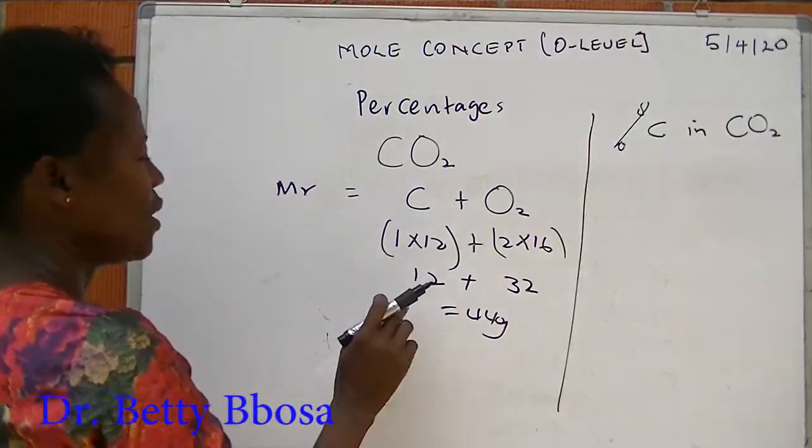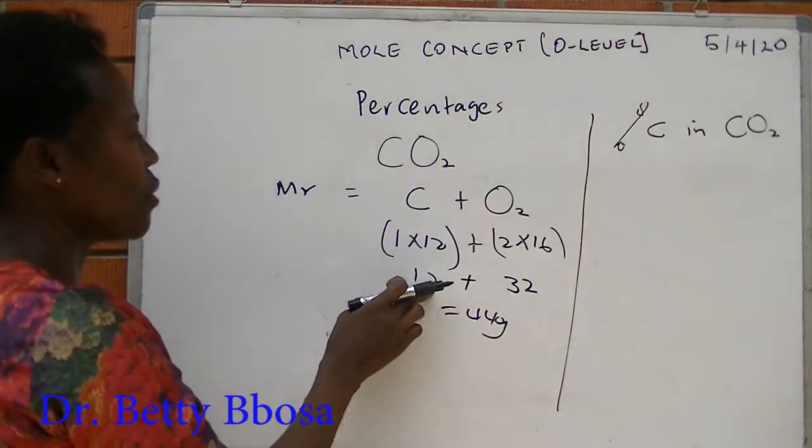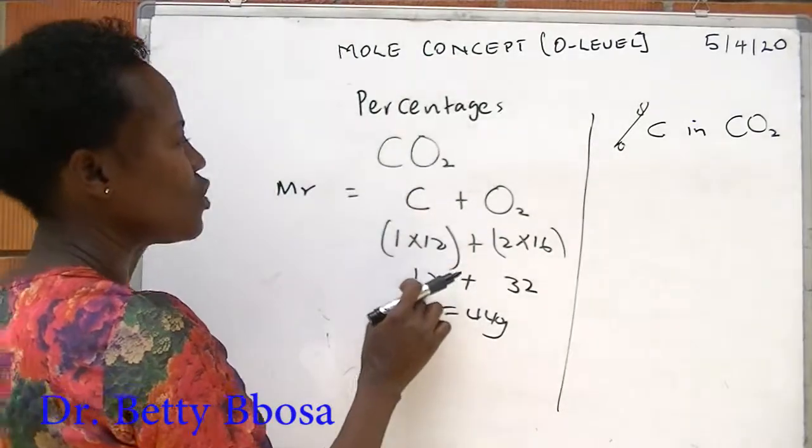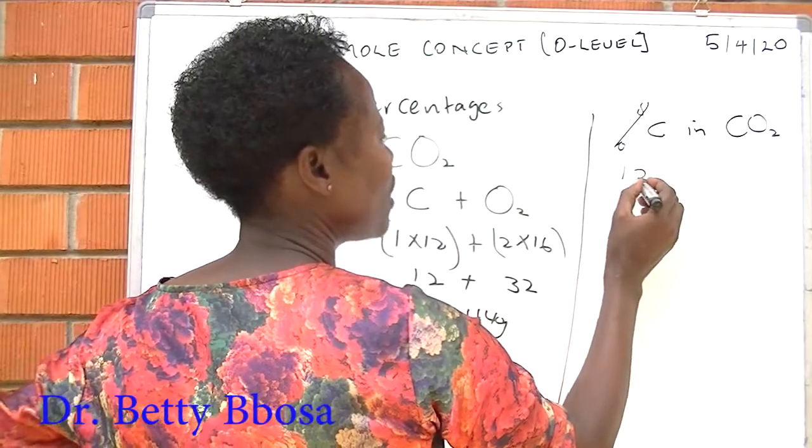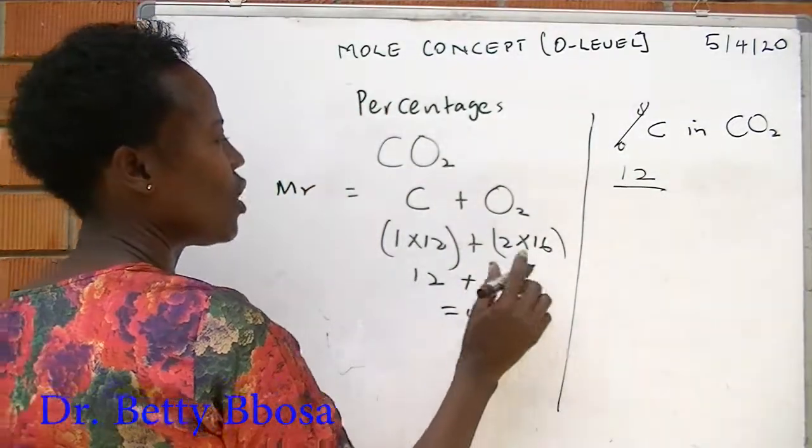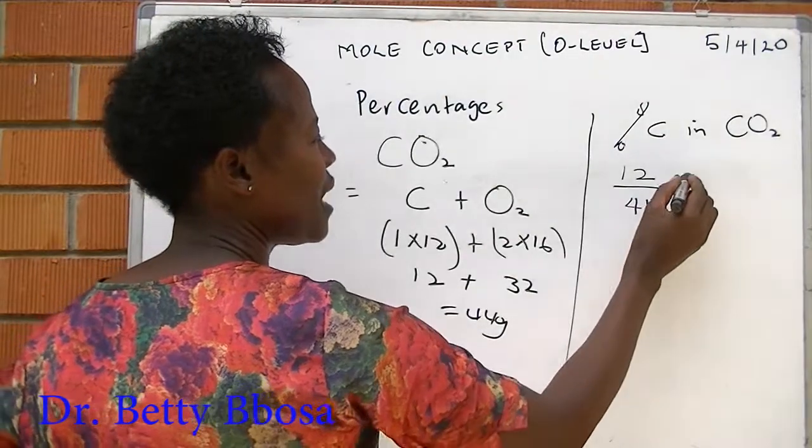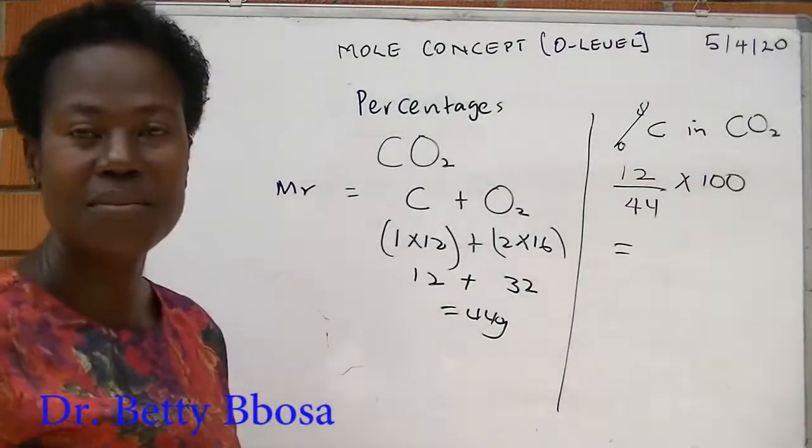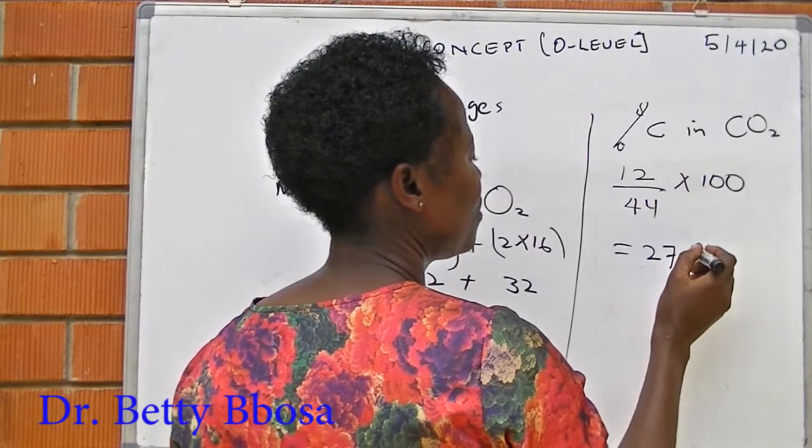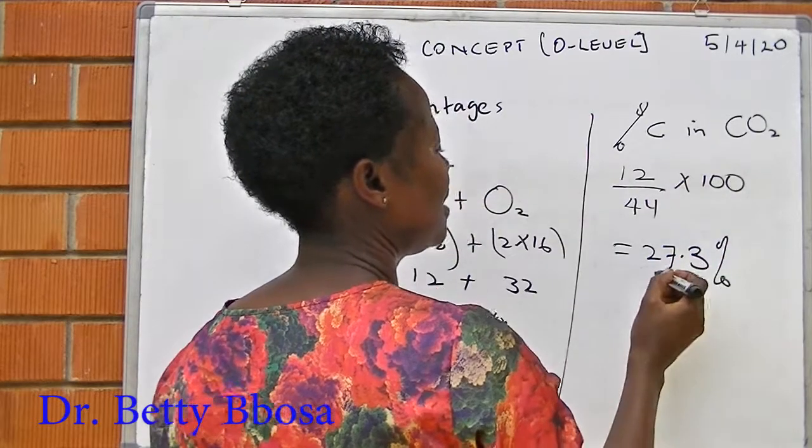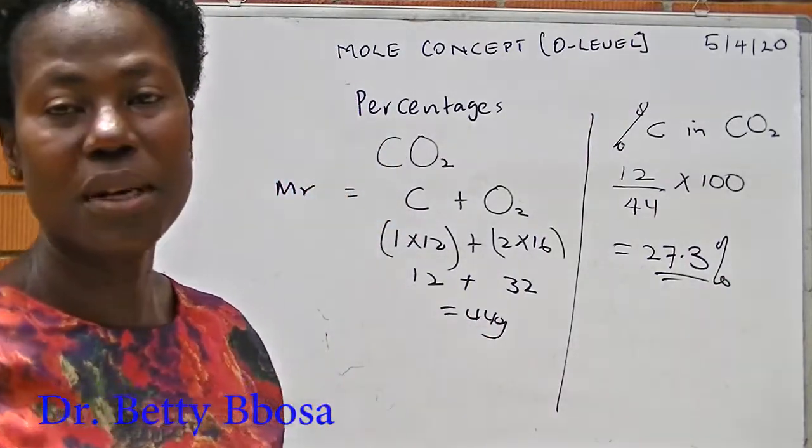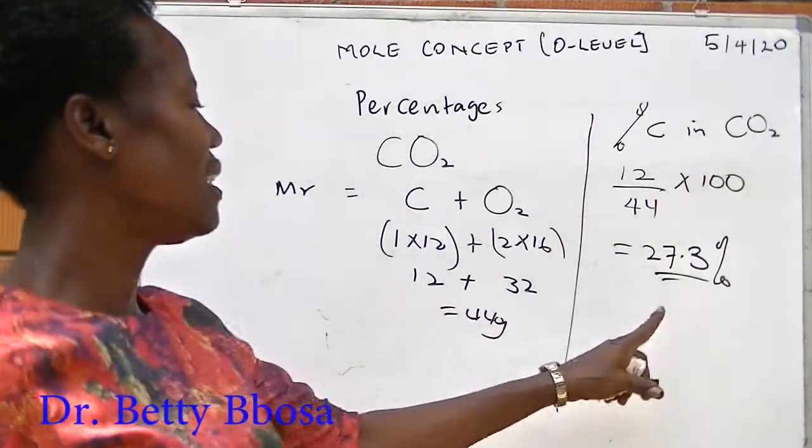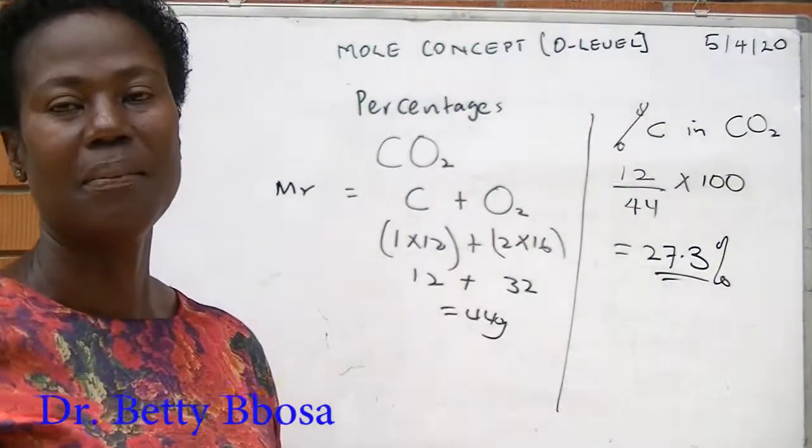How? We know that the total number of carbon, the mass of carbon in this molecule is 12. This is the same as 12 over the total, which is 44, times 100. The answer is 27.3%. So the percentage of carbon in carbon dioxide is 27.3%.